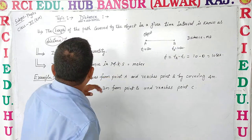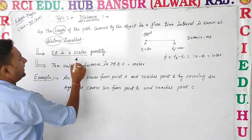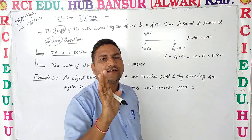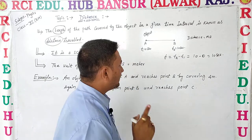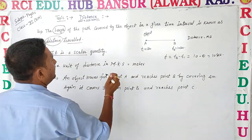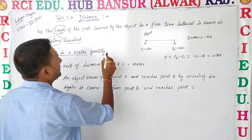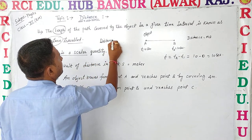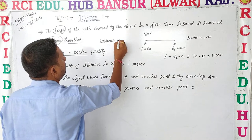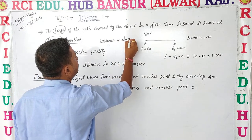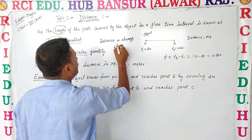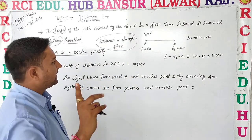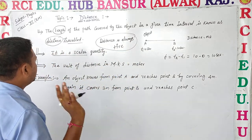Distance is a scalar quantity — not a vector — it is a scalar quantity. And distance is always positive.